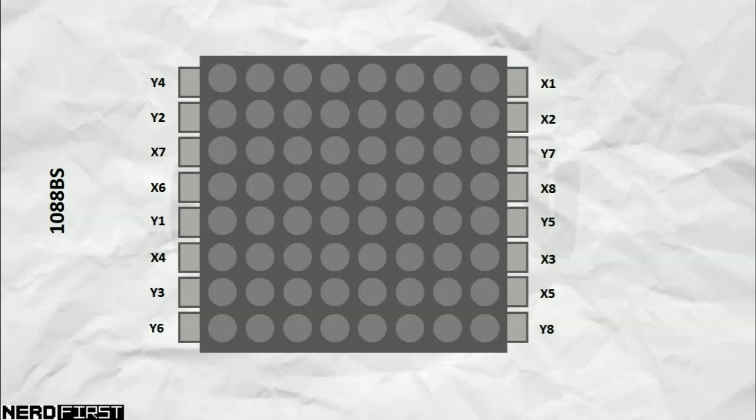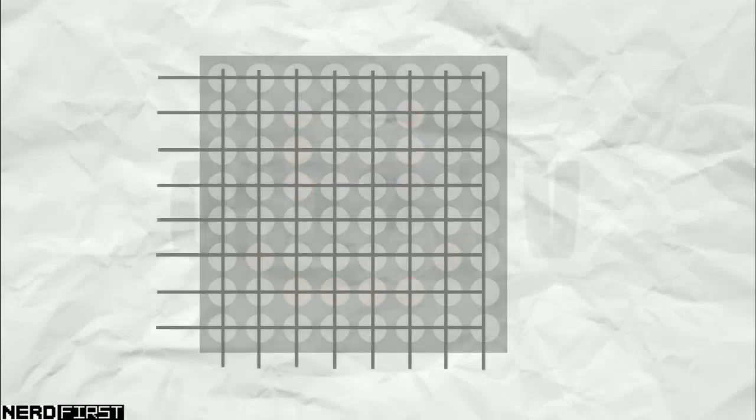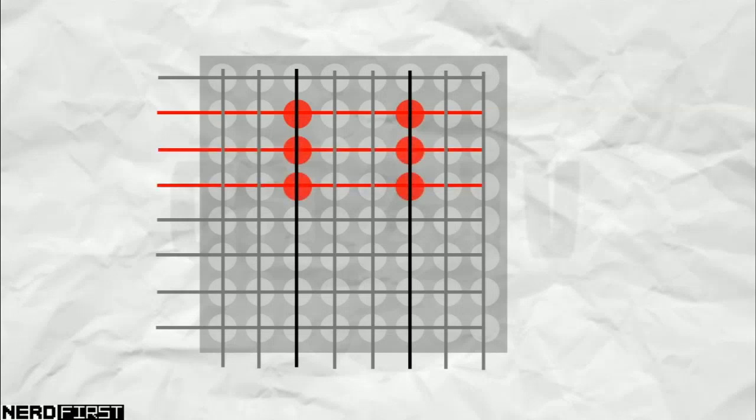Interestingly, there is another challenge, and that would come about when we try to draw a figure like this one. At face value, this seems quite simple. All I have to do is power up the first row, send the relevant columns to low, and then those LEDs will light up. Repeat that for the next two rows, and very nicely, the correct LEDs lights up without needing us to set any other columns.